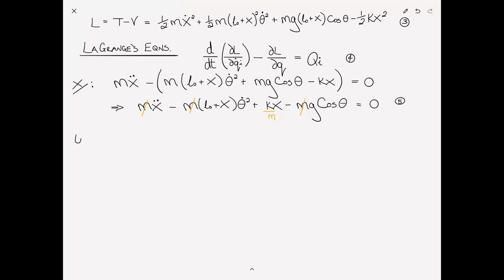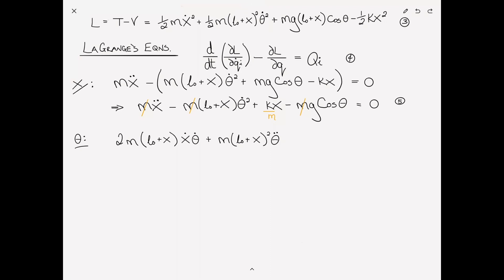Next we look at the theta coordinate. I take the derivative of L with respect to theta-dot; only the second term survives. Applying the chain rule when taking the time derivative, I get 2m(L0 + x)*x-dot*theta-dot plus m(L0 + x)²*theta-double-dot. Then the partial derivative with respect to theta gives plus mg(L0 + x)*sine(theta) equals 0. This is equation 6, the second equation of motion. I can divide through by m.